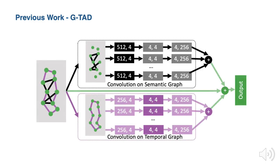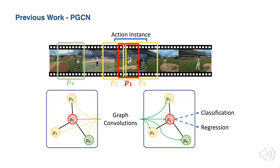This figure shows our basic GCNEXT block in GTAN. The green node represents the video snippet, black edges are the semantic correlations between nodes, and purple edges are the temporal correlations. We run convolution on both the semantic and temporal graph in a split-transform-merge fashion as in ResNeXt. The model output is the fusion of both graphs with a residual connection.